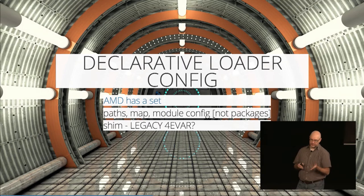In AMD, it's the paths, map, and module config parts of that declarative config. I'm hoping we can avoid the packages config by using the layout convention I'll mention a little later. And there's shim config for loading legacy code that doesn't call a module system — in the configuration you specify the dependencies and the export. I hope this goes away at some point, but we might need it for at least this transition period.